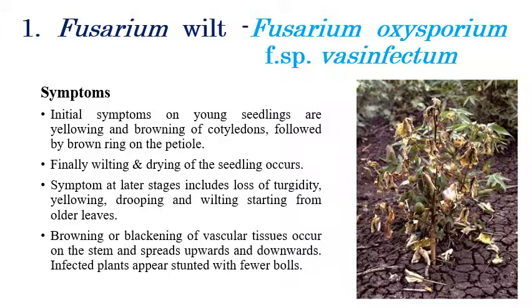Now we will see each disease in detail. The first one is Fusarium wilt, which is caused by Fusarium oxysporum f. sp. vasinfectum. Coming to the symptoms — on the right side we can clearly observe them. Yellowing can be clearly seen throughout the entire leaf, along with brown color discoloration.